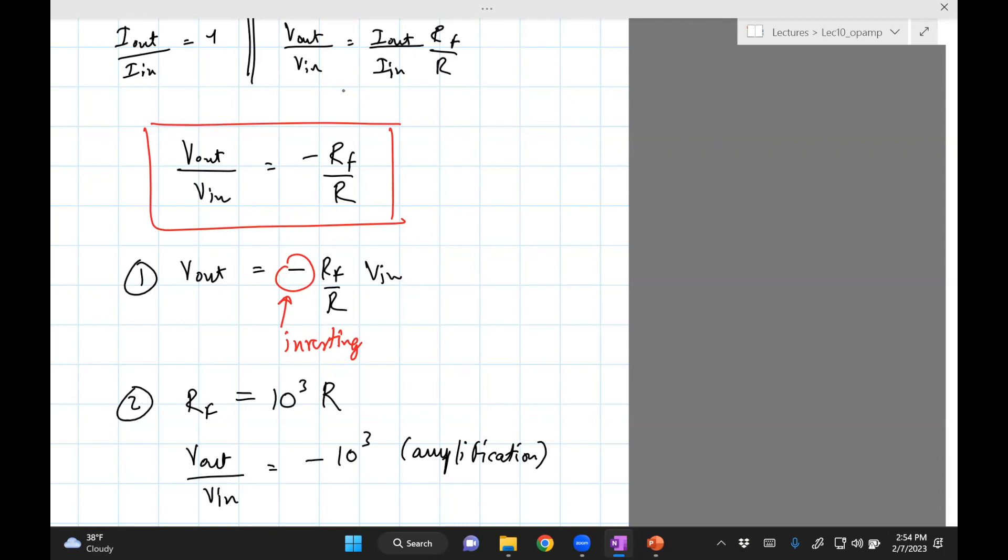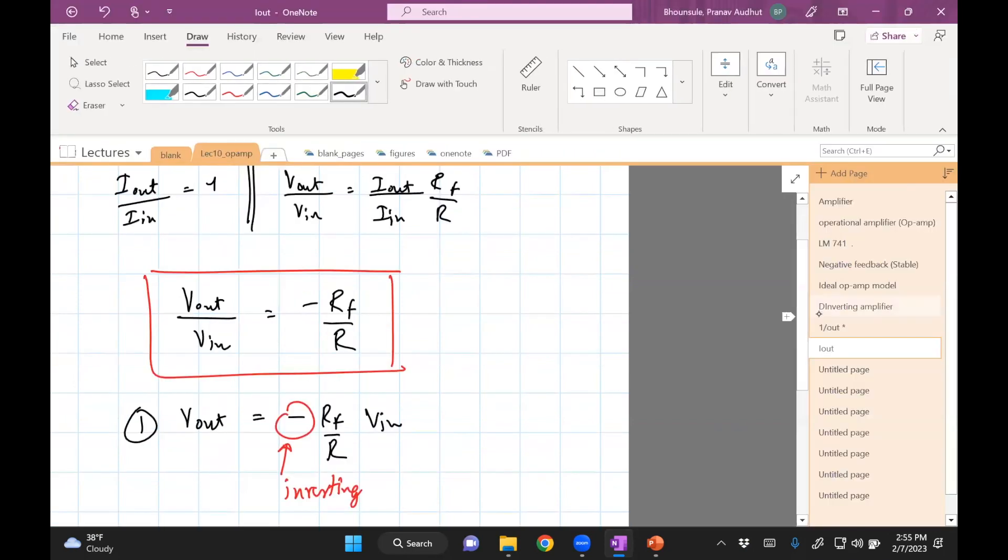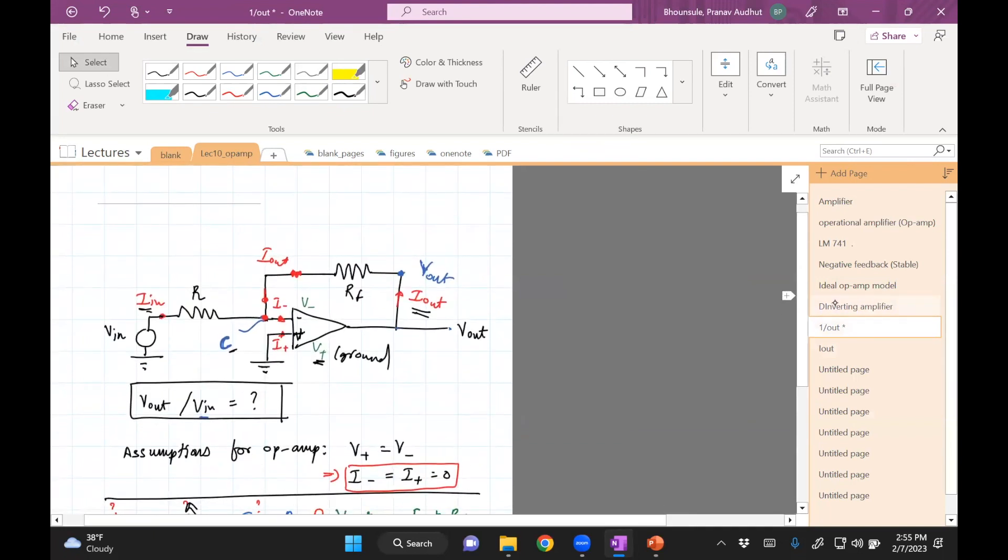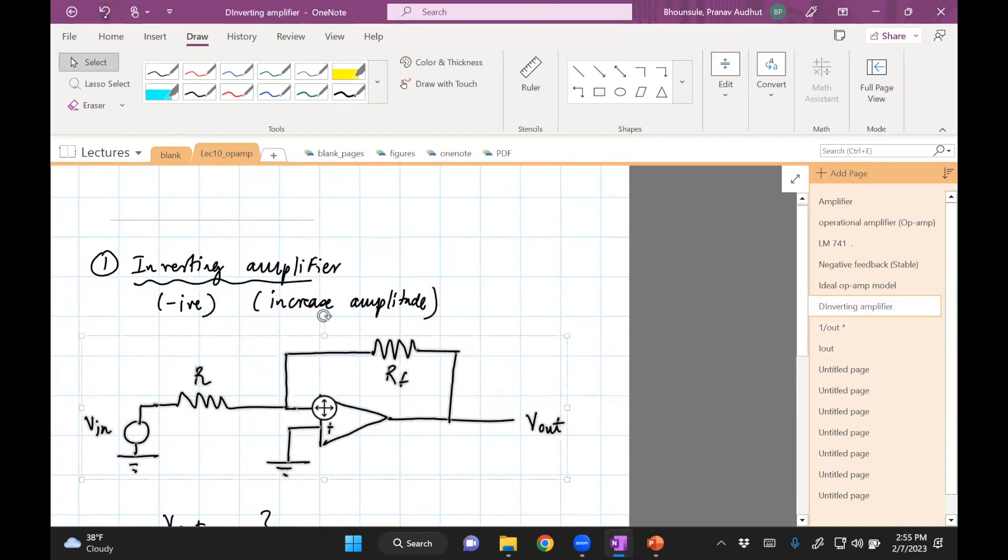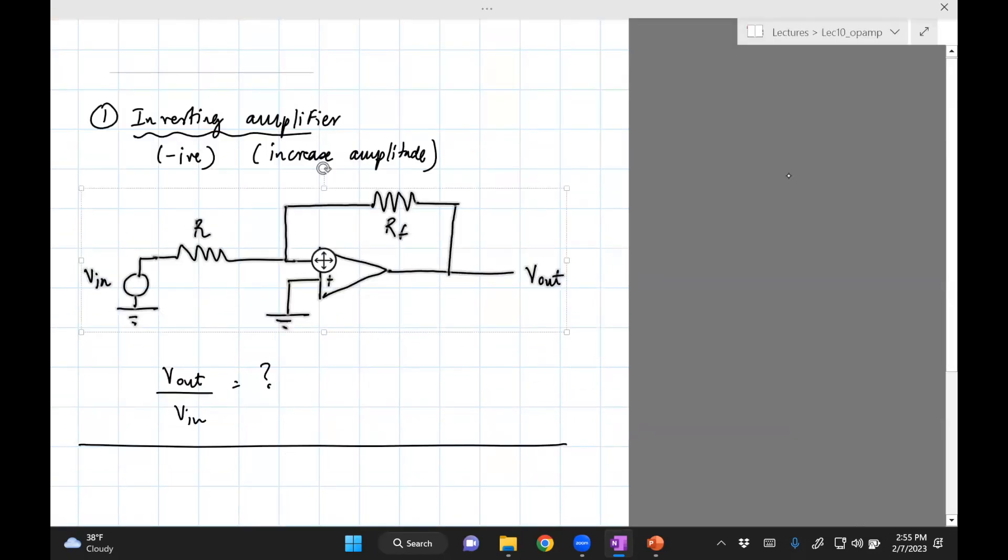So that's why this amplifier in this configuration, the one which I showed you here, is known as an inverting amplifier. It inverts the signal—the output is negative of the input—and it amplifies. It just depends on how you choose RF and R. So that's sort of one of the many things you can do. I'll stop here. Next time we'll talk about more of these functions of amplifiers, more circuits, and we'll analyze the circuits in a similar fashion.